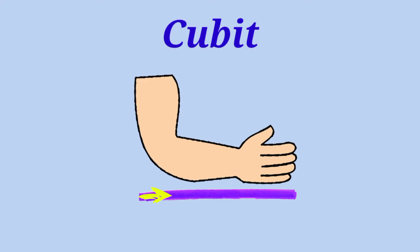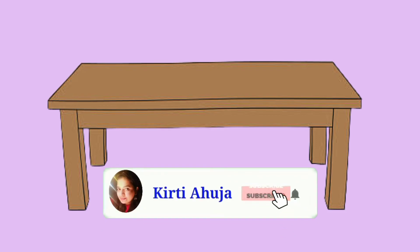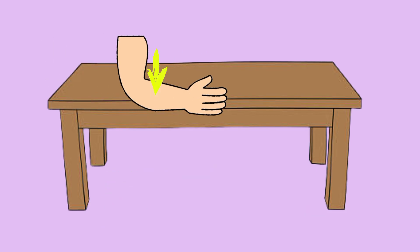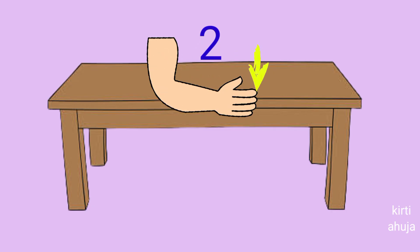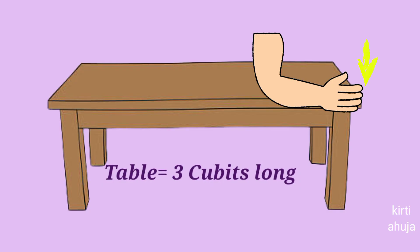Now, what is cubit? Cubit is the distance from the elbow to the tip of the longest finger. Let's measure the same table using cubit: 1 cubit, 2, and 3. So we can say that this table is 3 cubits long.